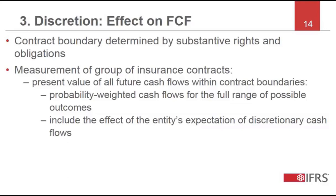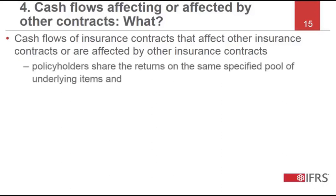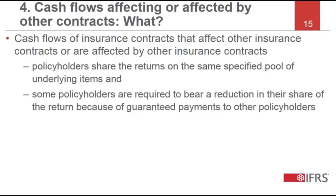Now let's move on to the fourth feature. Some insurance contracts affect the cash flows to policyholders of other contracts. This effect is sometimes called mutualisation; however, that term is not used in IFRS 17 or in this webcast. In these contracts, the substantive rights and obligations provide the policyholder the right to share the returns on a specified pool of underlying items with other policyholders, and the obligation to bear a reduction in their share of the return because of guaranteed payments to other policyholders.